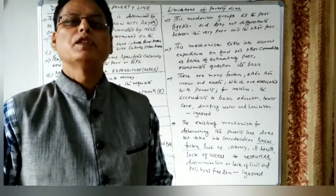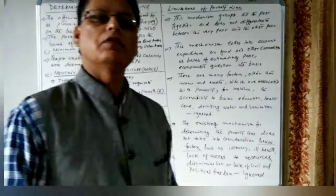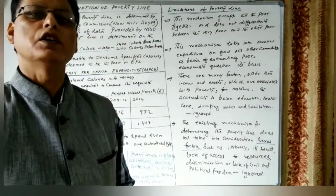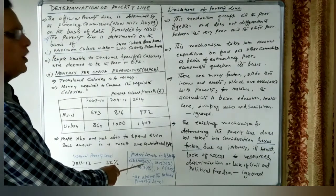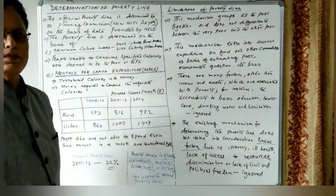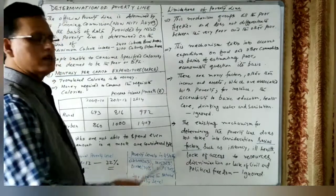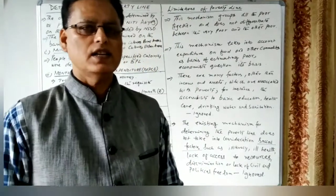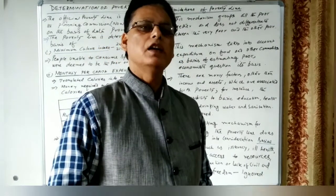While the national poverty level was 22 percent, there were certain states where the proportion of people below the poverty line was far above this national average. In Odisha, 36 percent of people were below the poverty line in 2011-12; in Madhya Pradesh, 36 percent; in Bihar, 34 percent; and in Uttar Pradesh, 30 percent.